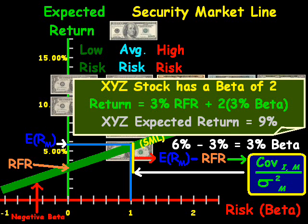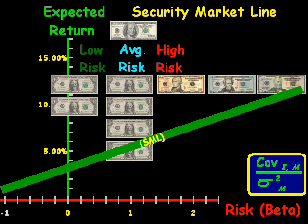If XYZ stock had a beta of 0, it would just equal the risk-free rate of 3%. And conversely, if XYZ stock had a beta of 3, you would increase the expected return to 12%. That's an example of how the security market line works.